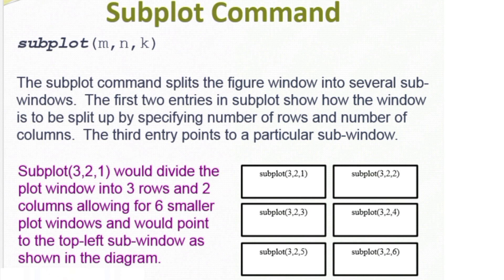The last plotting command we're going to talk about is subplot. What subplot does is it takes a figure window, breaks it up into several subwindows, and then you can put different plots in different subwindows. Subplot has three input arguments: the first says how many rows you want the figure window broken into, the second says how many columns, and the last argument points to a particular subwindow. For example, subplot(3, 2, 1) means take the figure window, divide it into three rows and two columns, and the third argument of 1 points to the top left subwindow.